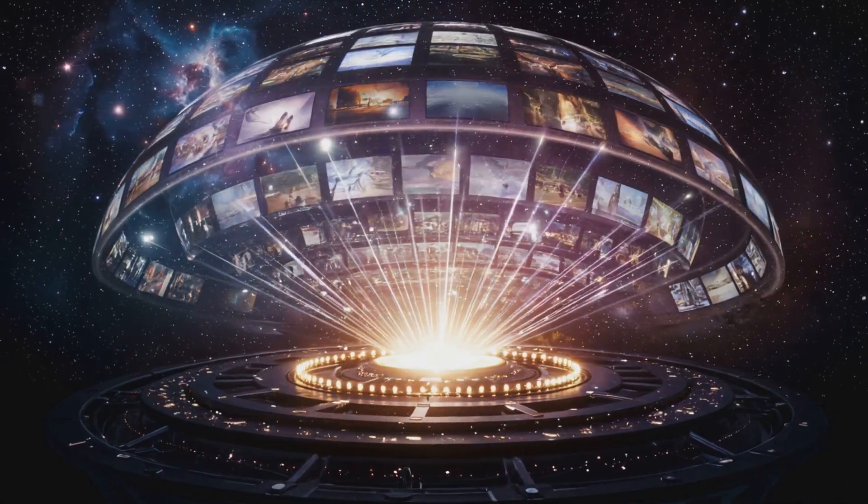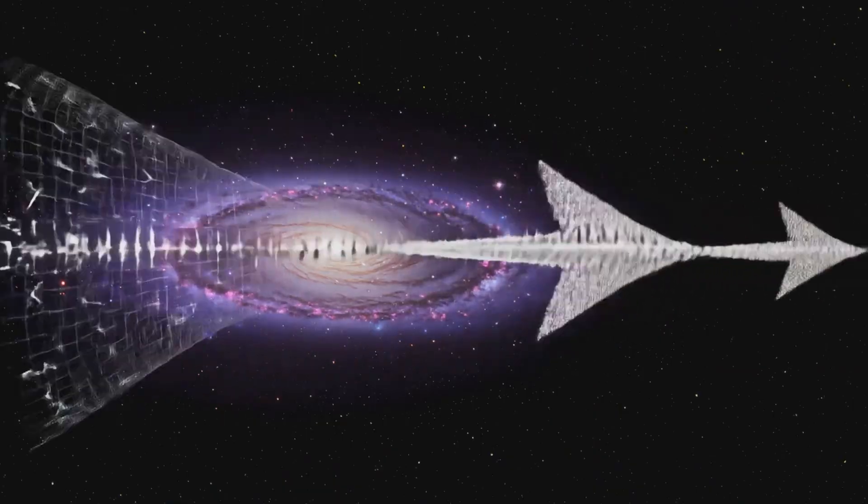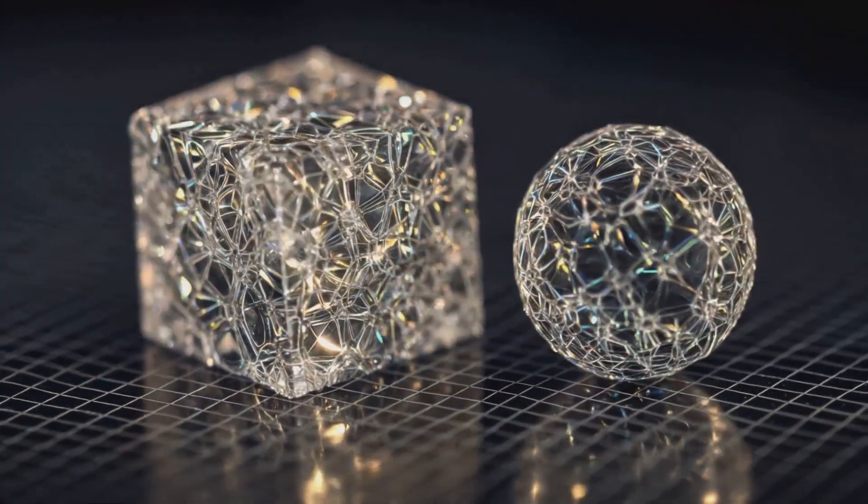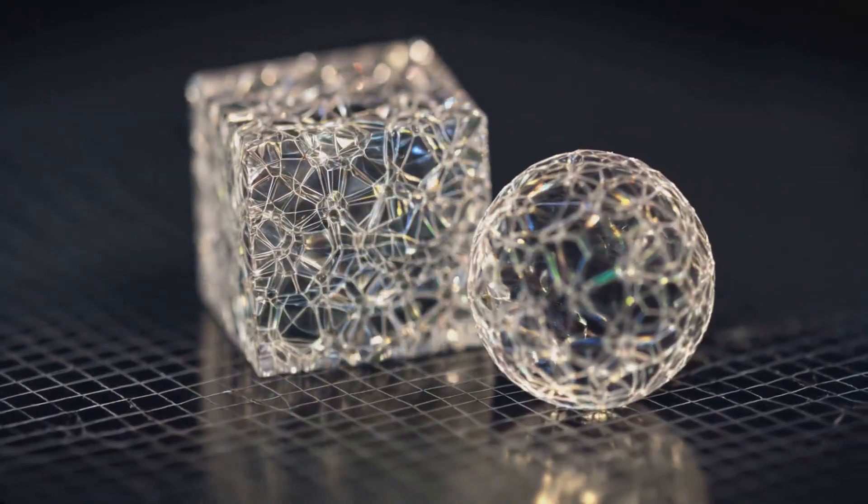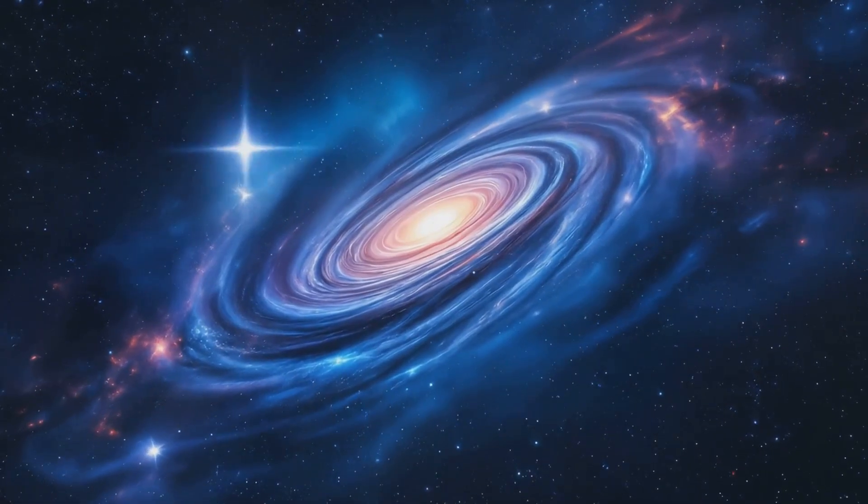Every pulse of Hawking radiation carries forward not decay but memory. Each etched spin forms the next. The rendering is continuous, recursive, self-consistent. What you call solid is just stabilized light. What you call separate is just decohered alignment. This is not poetry. This is architecture.